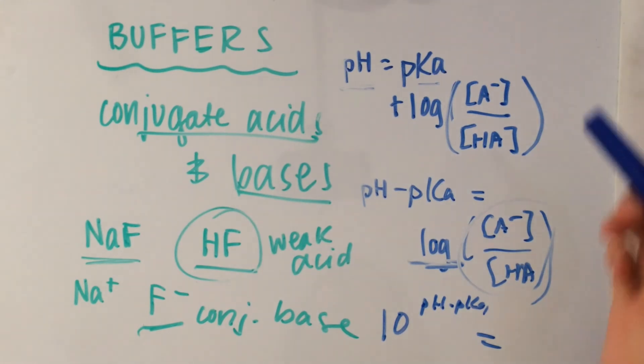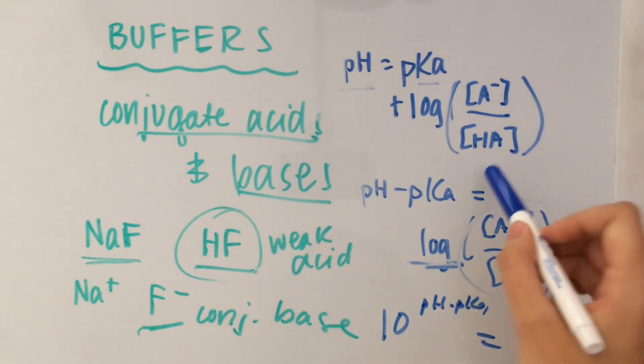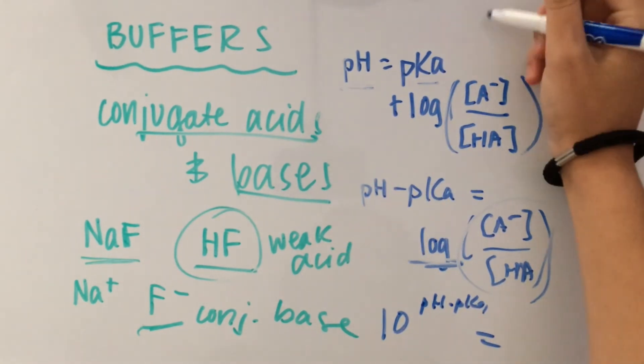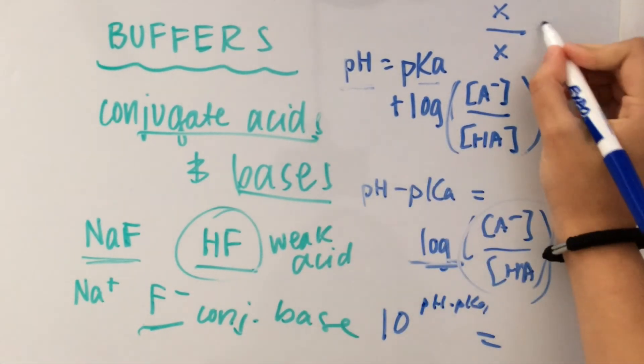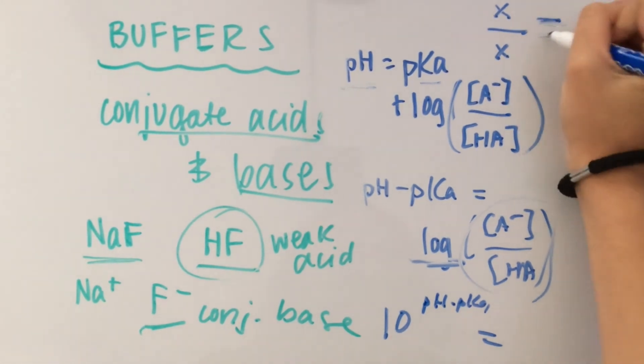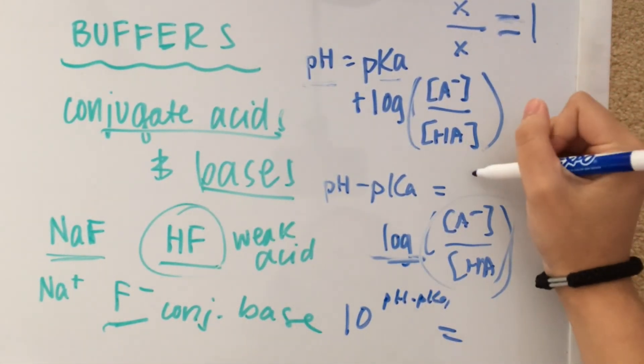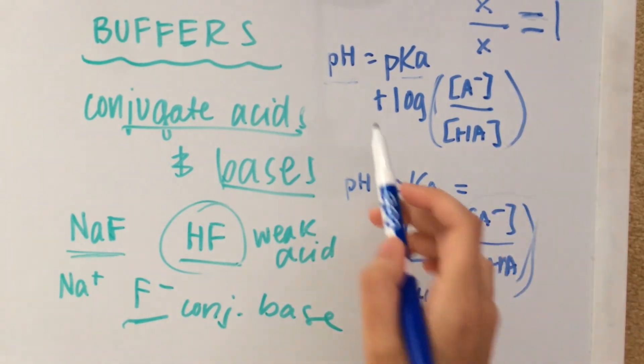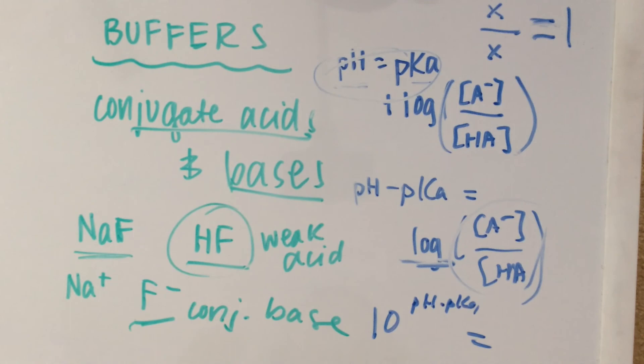Also, notice that whenever our concentration of A minus over HA, whenever these two are the same, whenever we have one thing and the same thing as a denominator, that always ends up simplifying to 1. So the log of 1 is just 0. So that means when we have the same concentration of base and its conjugate acid, then pH equals pKa. Just a handy little thing for you to know.